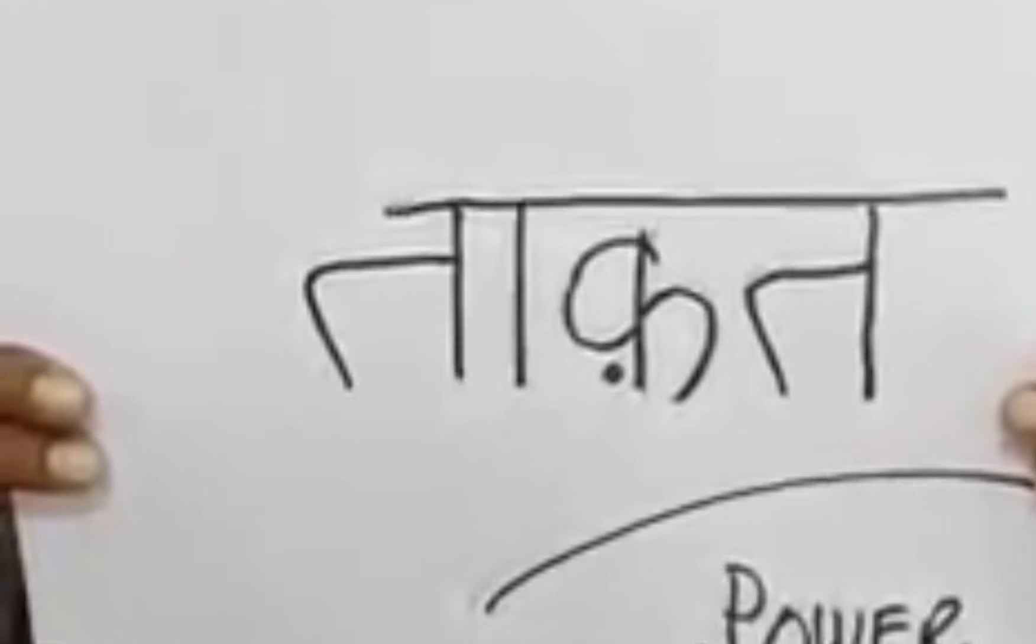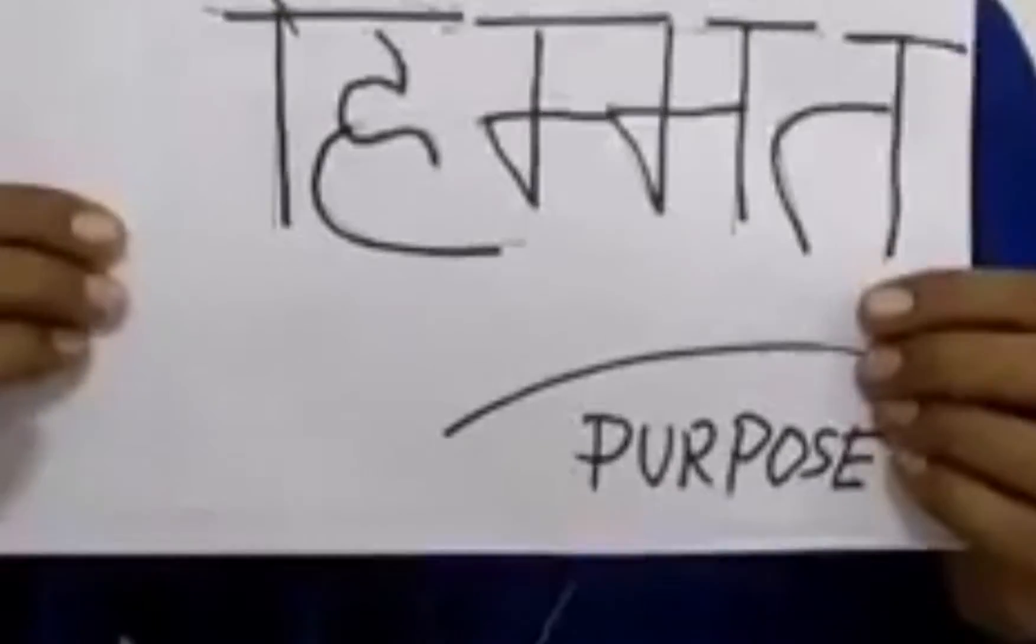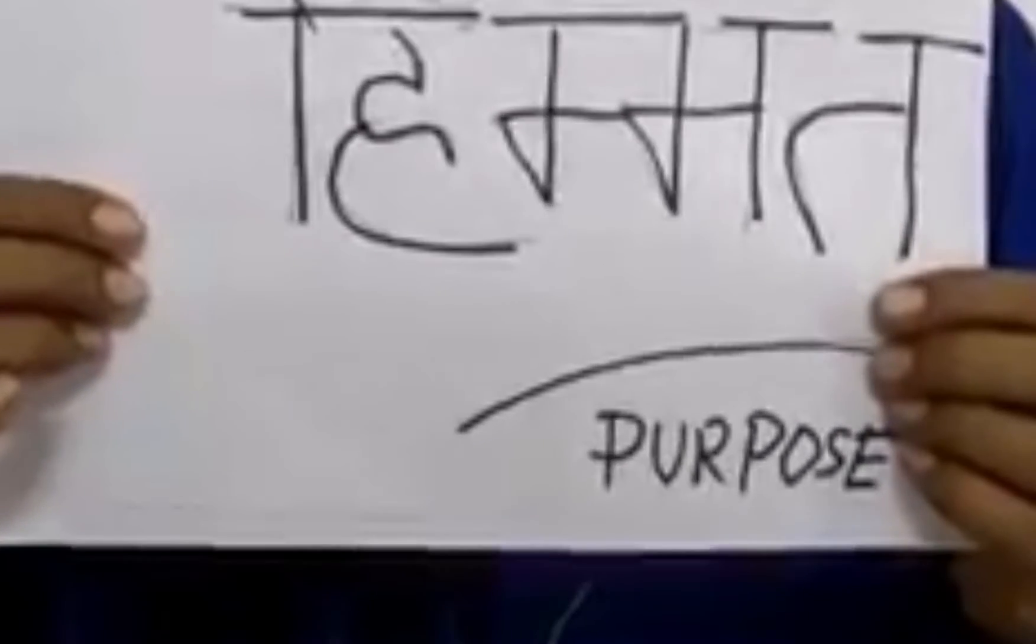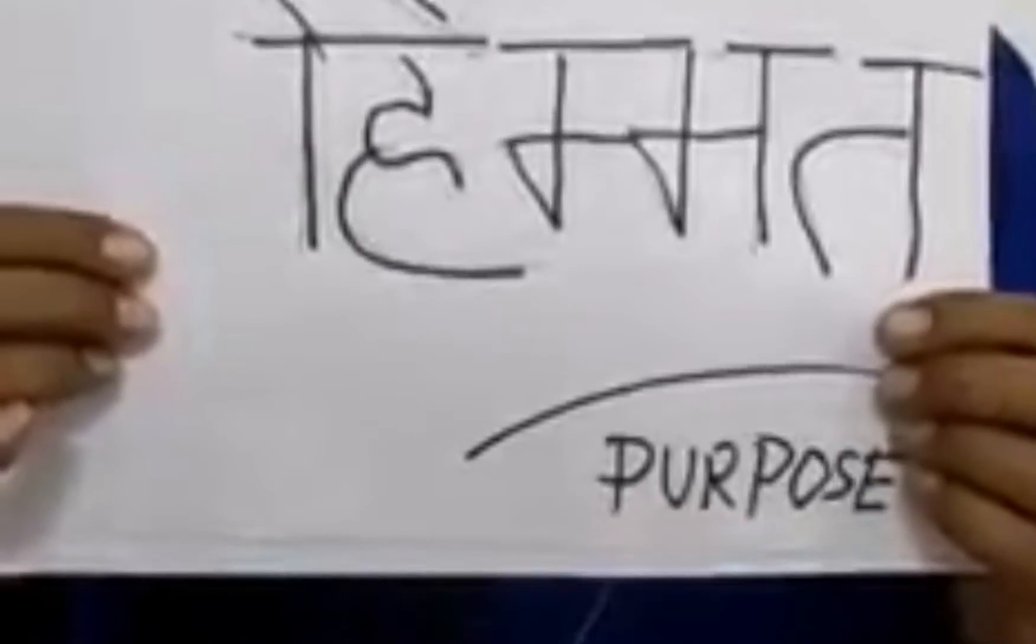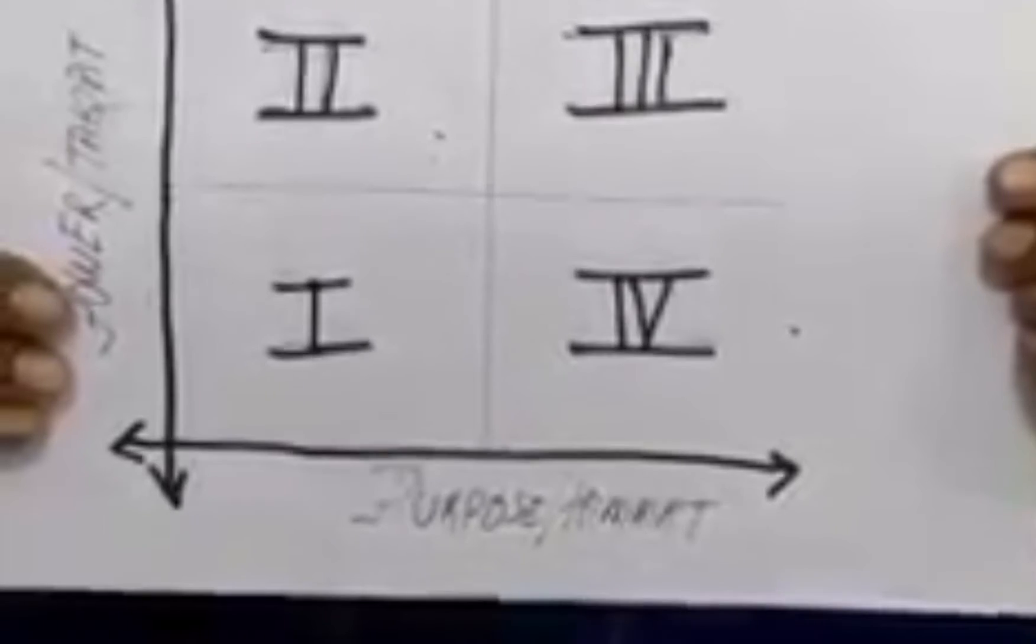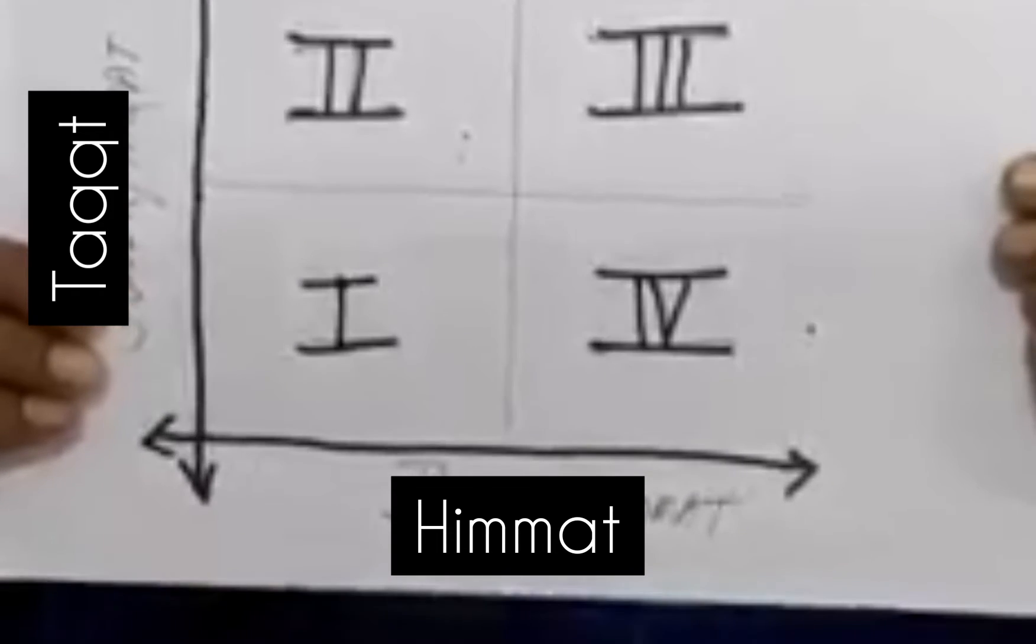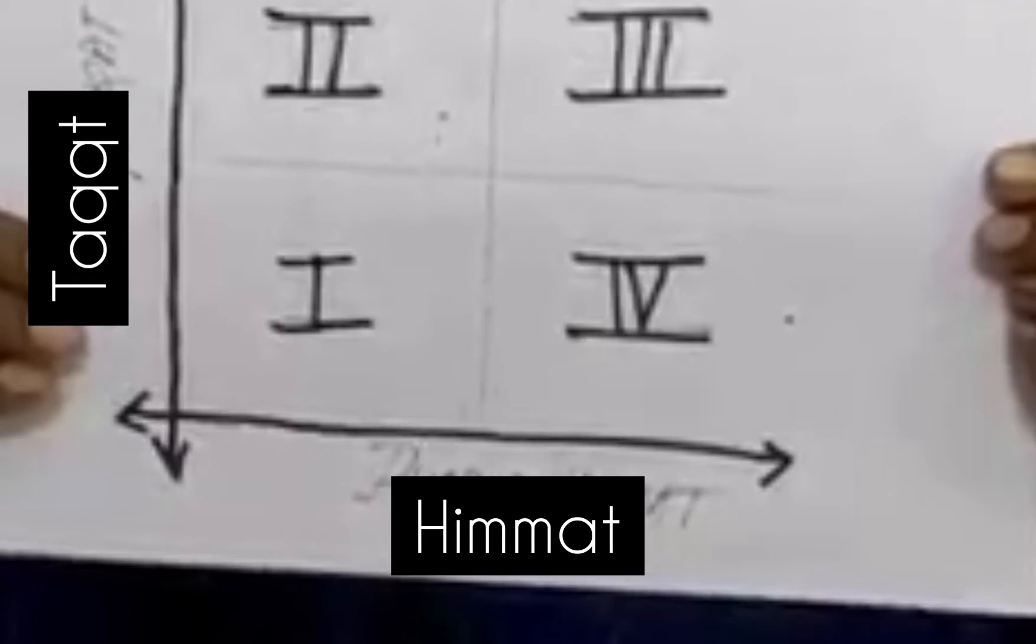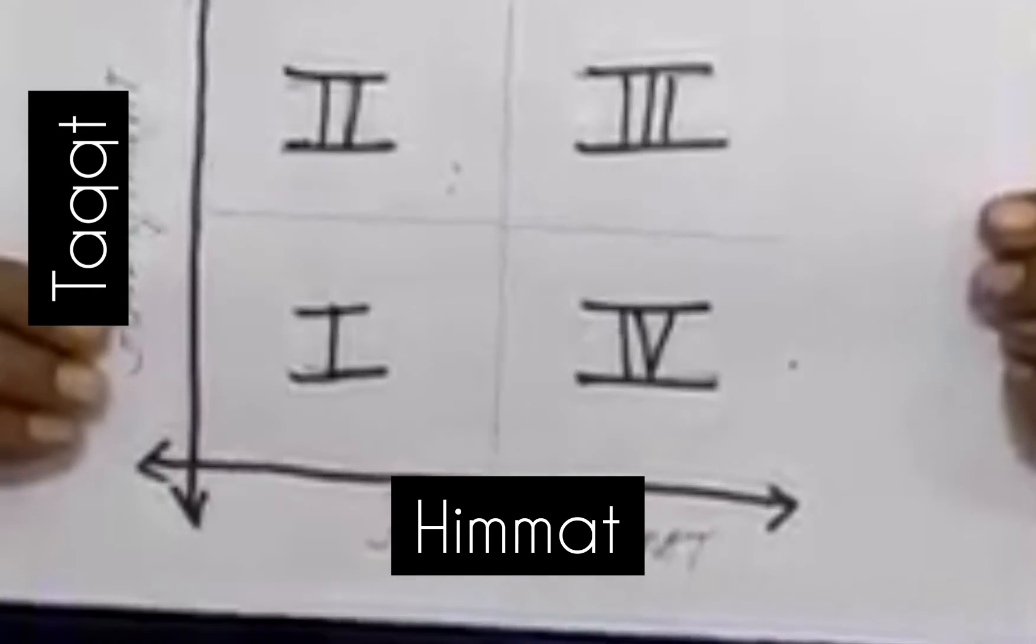Takat means power. Another element is himmat. Himmat, if I may call it as purpose, because if your purpose is clear then definitely you will have a lot of courage. Courage is the by-product of your clarity in purpose. So ladies and gentlemen, boys and girls, this is a matrix - himmat versus takat, purpose versus power. X-axis, y-axis. Power is on the y-axis and purpose on the x-axis.